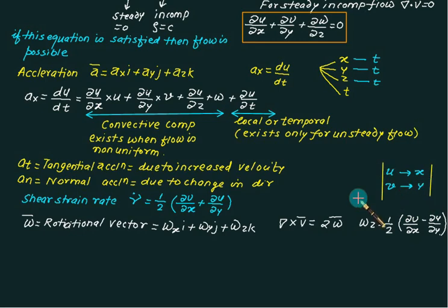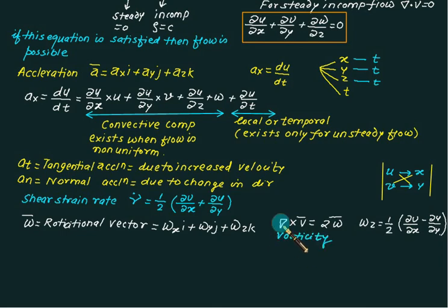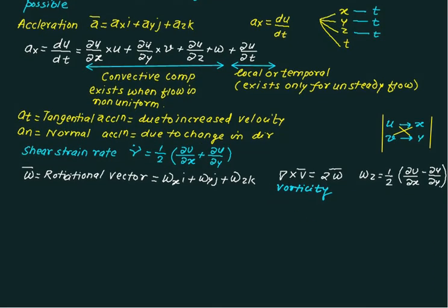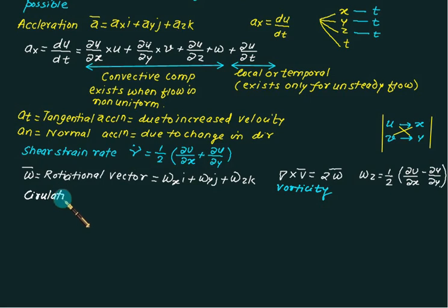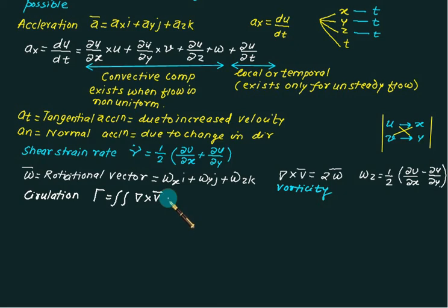The product ∇ × V̄ is also called vorticity. If we know the vorticity, we can calculate circulation. Circulation is given by the double integral of vorticity — that is, (∇ × V̄) · dA, where dA is perpendicular to the vorticity.